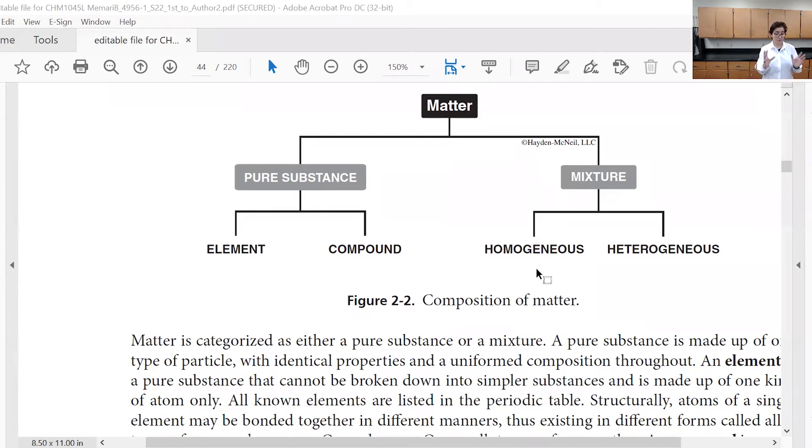Air is a homogeneous mixture because it's a mixture of nitrogen, oxygen, and other gases. But it's homogeneous, it's uniform.